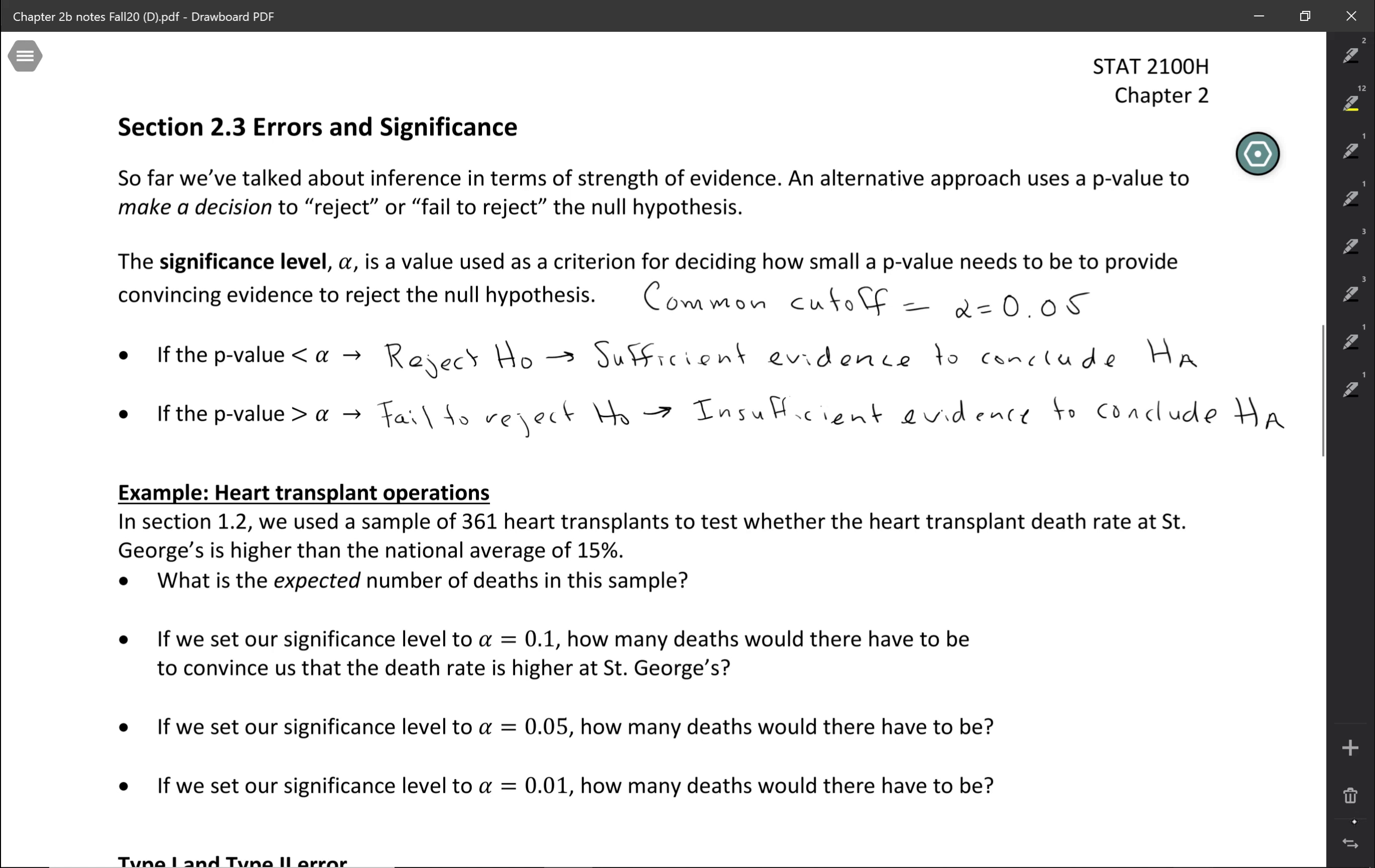So in section 1.2, we used a sample of 361 heart transplants to test whether the heart transplant death rate at St. George's is higher than the national average of 15%. So first of all, let's think about what is the expected number of deaths in this sample. So expected meaning what would we expect if the null were true? So we have 361 in our sample and the null hypothesis death rate is 15%. So the expected number of deaths in this sample would be 54.15.